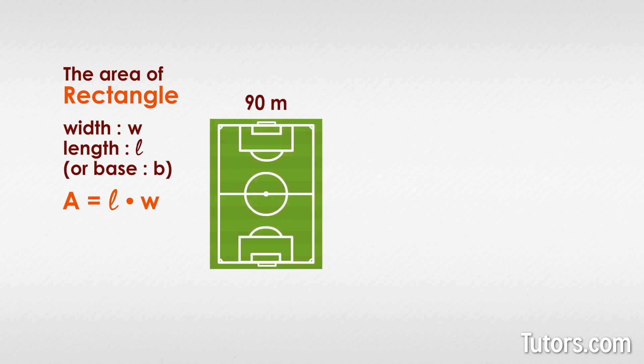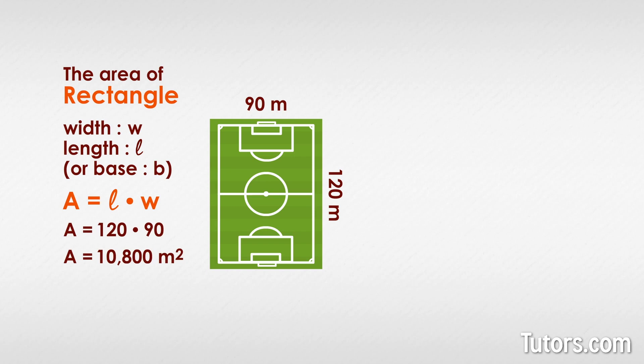Here is a rectangle 90 meters wide and 120 meters long — the largest size of a FIFA soccer field. What is its area? We start with our formula, a equals length times width. Plugging in our numbers, we get a equals 10,800 meters squared. Because the soccer field is measured in linear meters, its area is square meters.